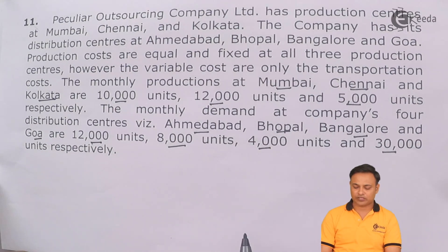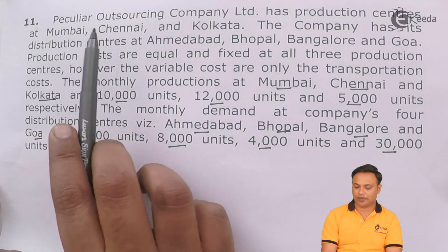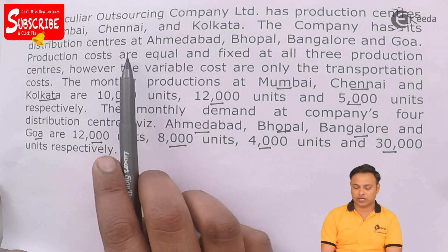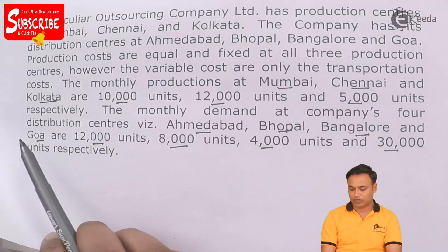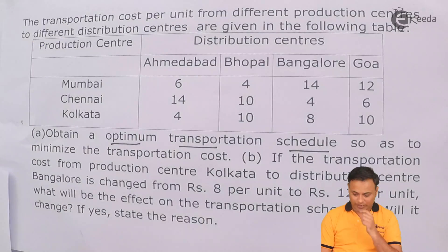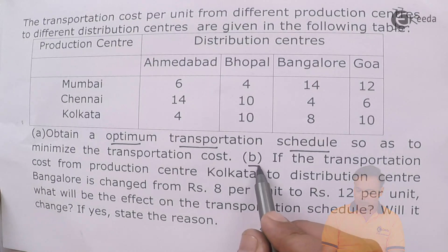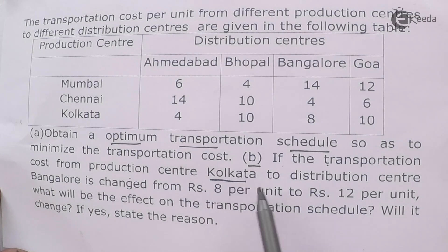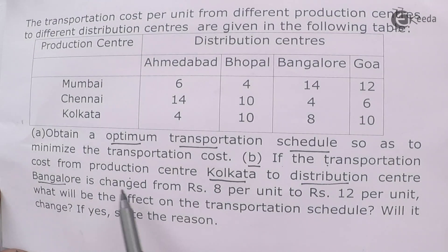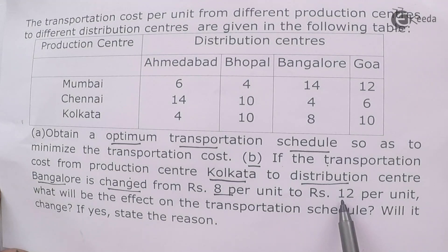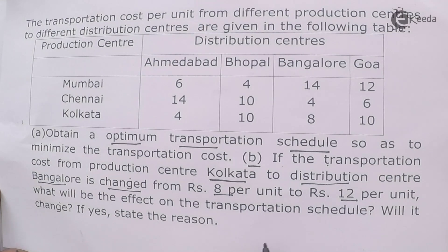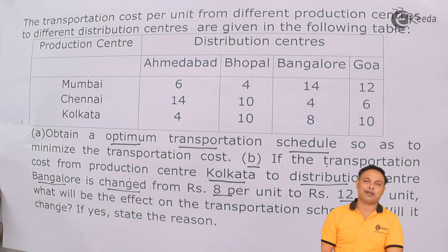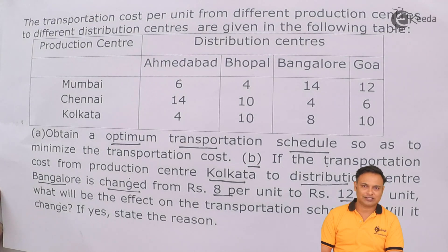This problem is based on three production centers — Mumbai, Chennai, and Kolkata — and four distribution centers — Ahmedabad, Bhopal, Bangalore, and Goa. The second part of the table asks: if the transportation cost from production center Kolkata to distribution center Bangalore is changed from 8 to 12, what will be the effect on the transportation schedule? Will it change? If yes, state the reasons.